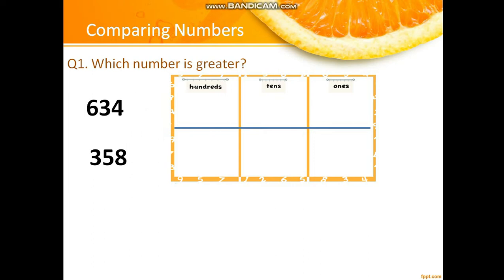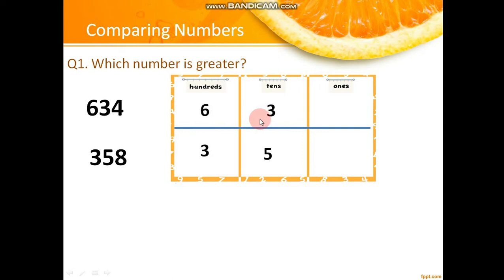First, put these numbers in a place value chart. The two numbers are 634 and 358. At hundreds place, there is 6 in the first number and 3 in the second number. Moving to tens, there is 3 in the first number and 5 in the second. At ones place, we have 4 in the first number and 8 in the second.